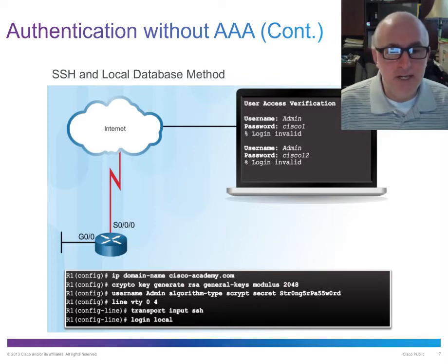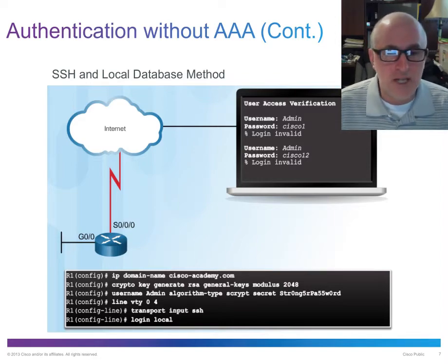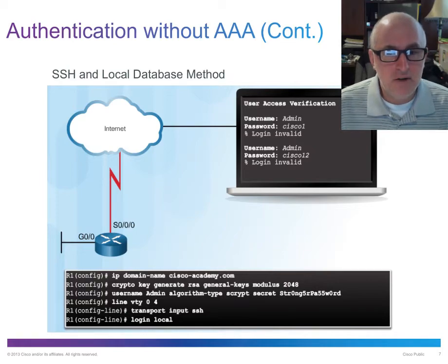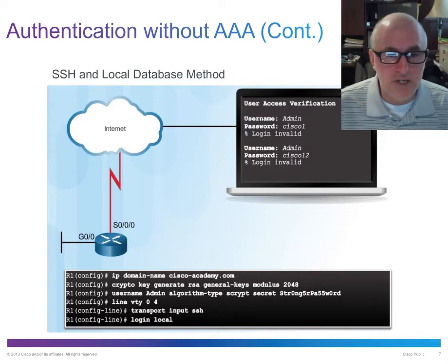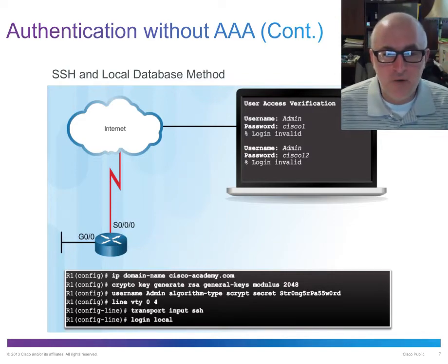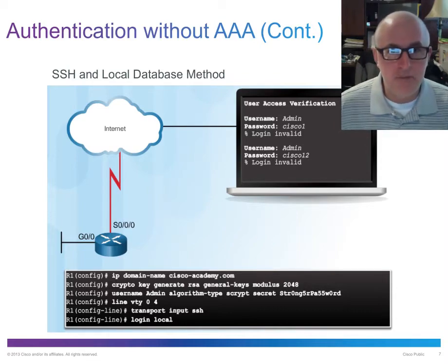They've adapted it a little bit. If you look at the username command, we talked about this in the last chapter — they are changing the hashing algorithm away from MD7. Using 'username admin secret strong-password,' that 'secret' keyword would indicate an MD5 hash. What they've done is chosen the scrypt algorithm instead of MD5, and you can modify your encryption algorithm.